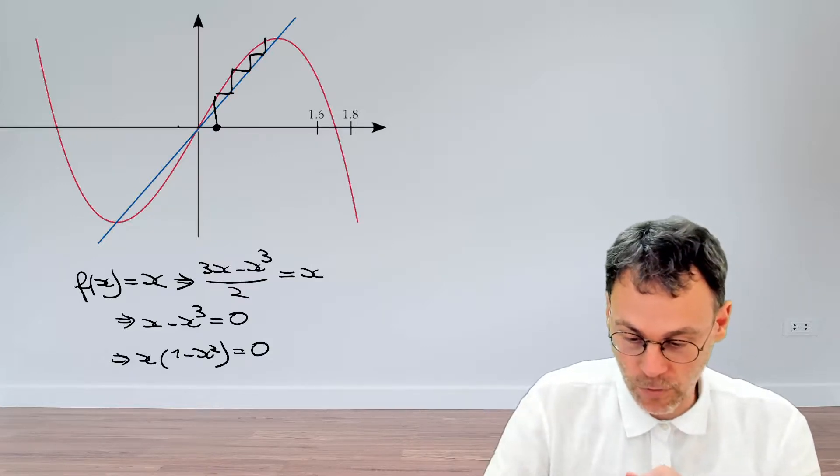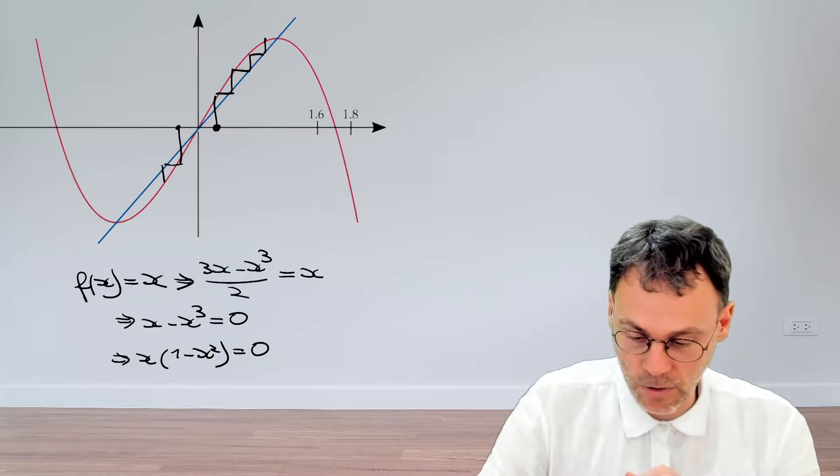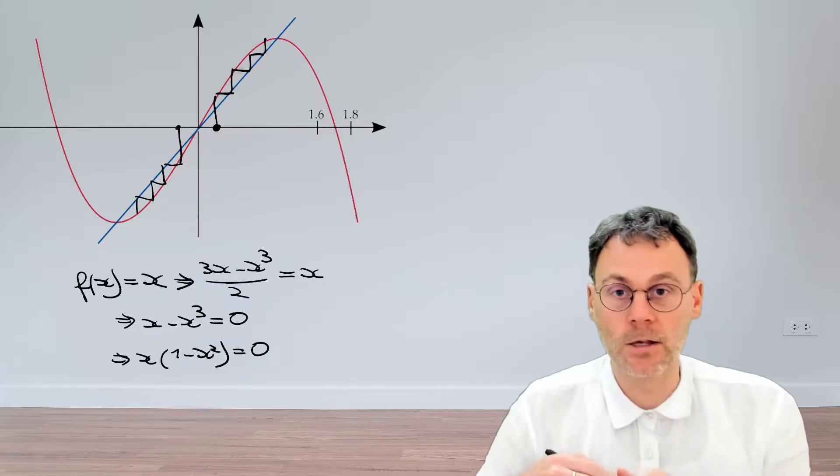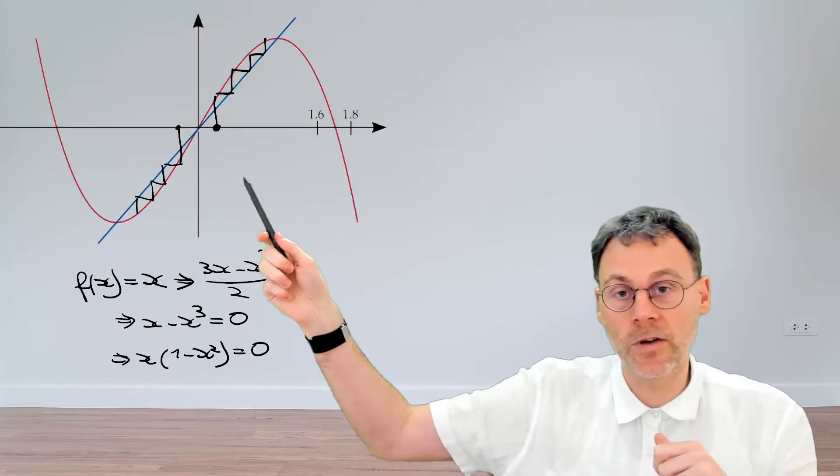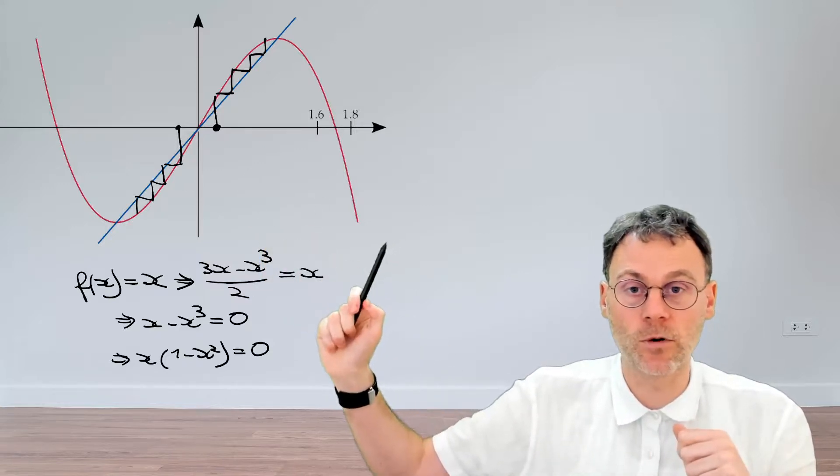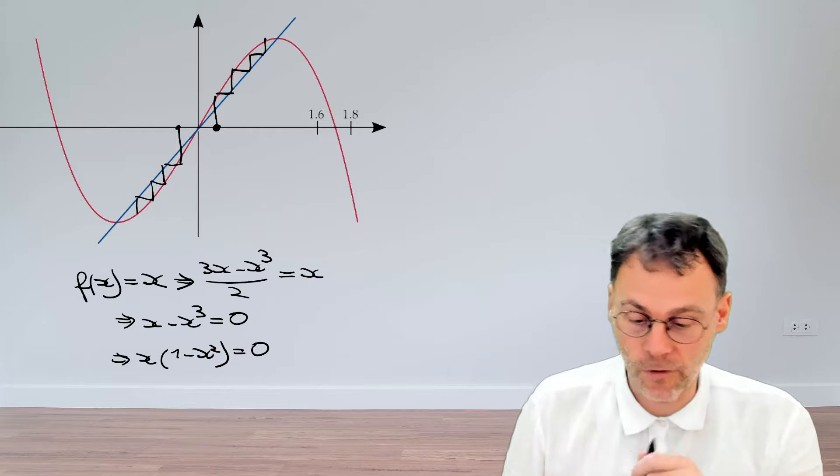It doesn't help to start from the other side—you will also run away. So here you can clearly see that the origin is a fixed point, but it's an unstable fixed point. The orbits run away from the origin.